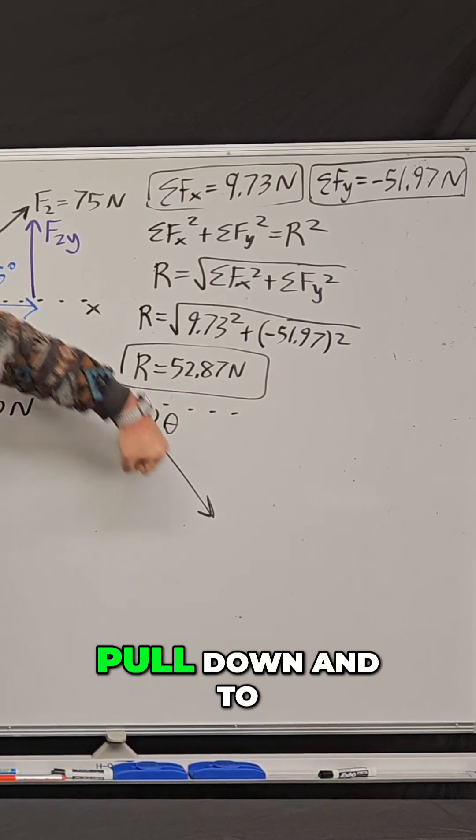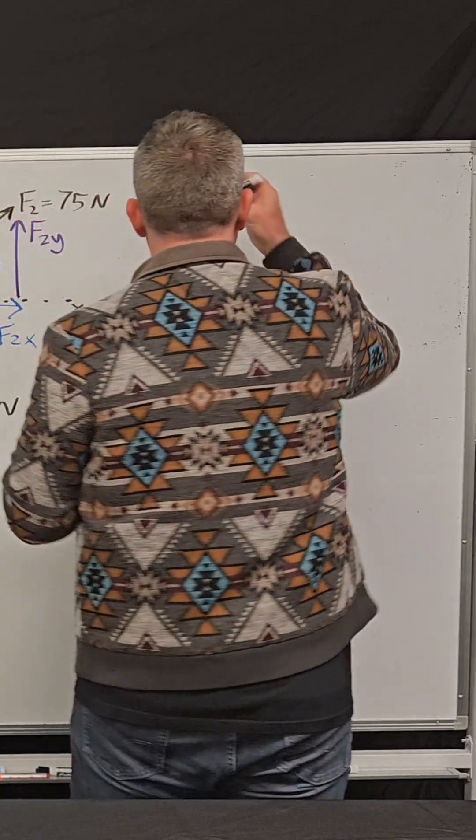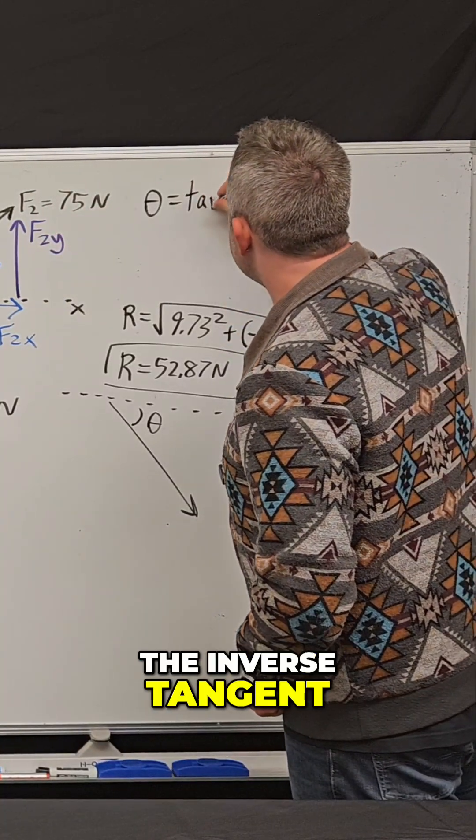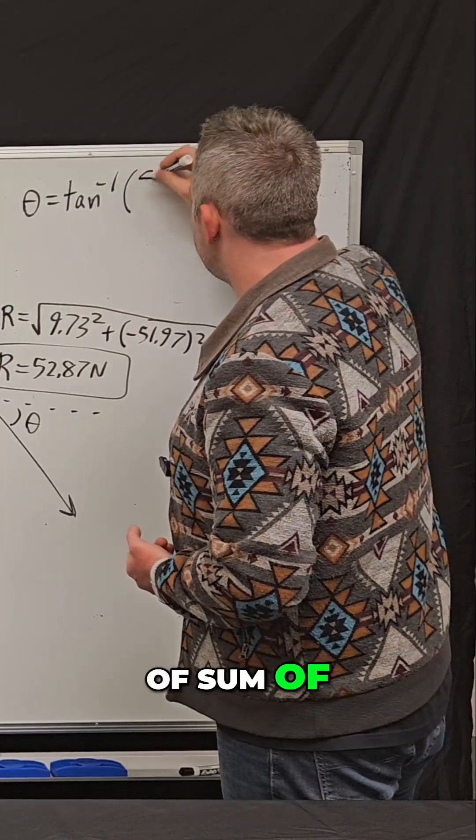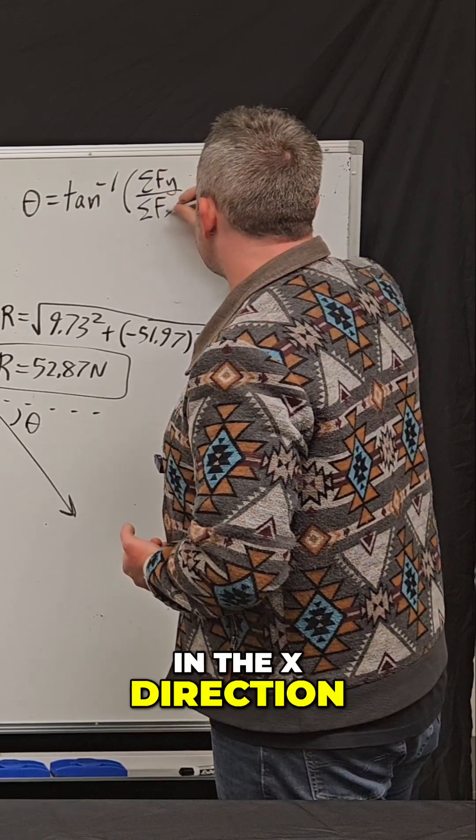I know that I have to pull down and to the right at some angle theta. Theta is equal to the inverse tangent of the sum of the forces in the y direction over the sum of the forces in the x direction.